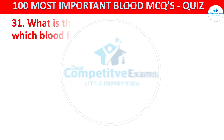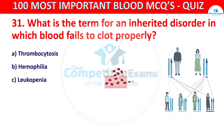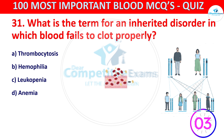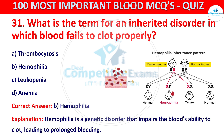Question number 31. What is the term for an inherited disorder in which blood fails to clot properly? Your options are thrombocytosis, hemophilia, leukopenia, or anemia. The correct answer is B, that is hemophilia. Hemophilia is a genetic disorder that impairs the blood's ability to clot, leading to prolonged bleeding.